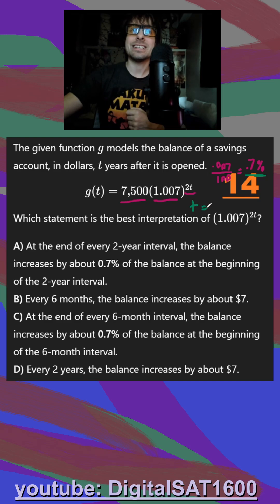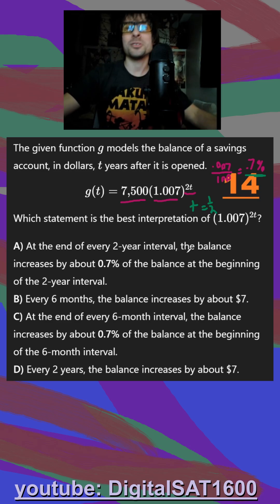It would be when t is equal to one half. One half times two gets me one, we would have an increase of 0.7%. So that's going to really help us going through the answers.